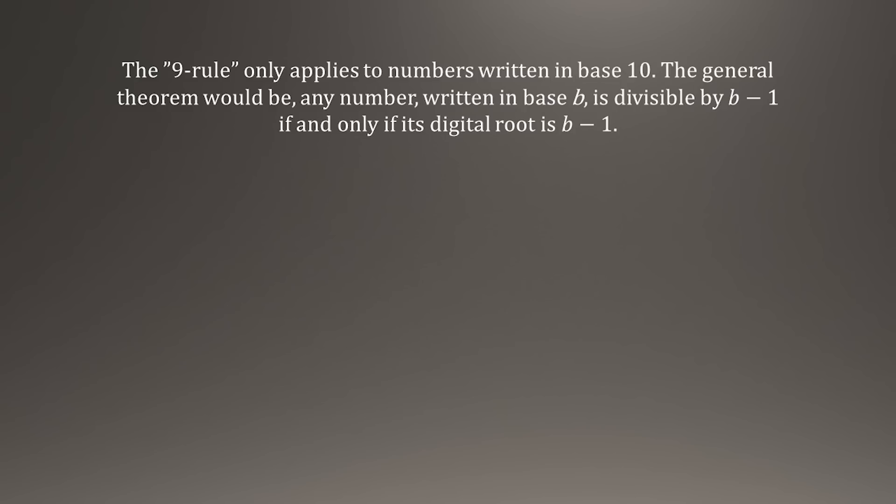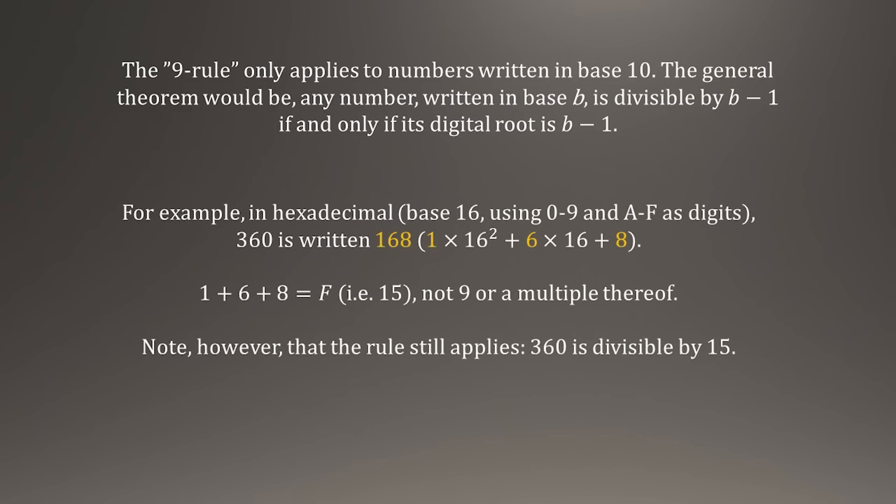In base B, this phenomenon occurs with the number B minus 1. You'll notice that in hexadecimal, base 16, using 0 to 9 as well as A to F as the 16 digits, A meaning 10 and F meaning 15, 360 is written 168. Those digits add up to 15, or F, making that the hexadecimal digital root, not 9. Interestingly, however, 360, or 168, is indeed divisible by 15, because 15 is 1 less than the base 16, just like 9 is 1 less than 10.